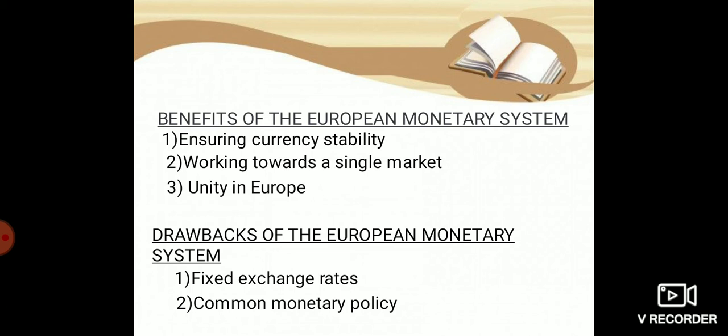Drawbacks of the European Monetary System: The first drawback is the fixation of exchange rates, which affected different members in different ways and was not beneficial to all economies, as became evident in the 1992 crisis. The second drawback is the common monetary policy — the EMS promoted a common monetary policy, so rising or decreasing interest rates affected all economies differently, just as seen in the 1992 crisis.